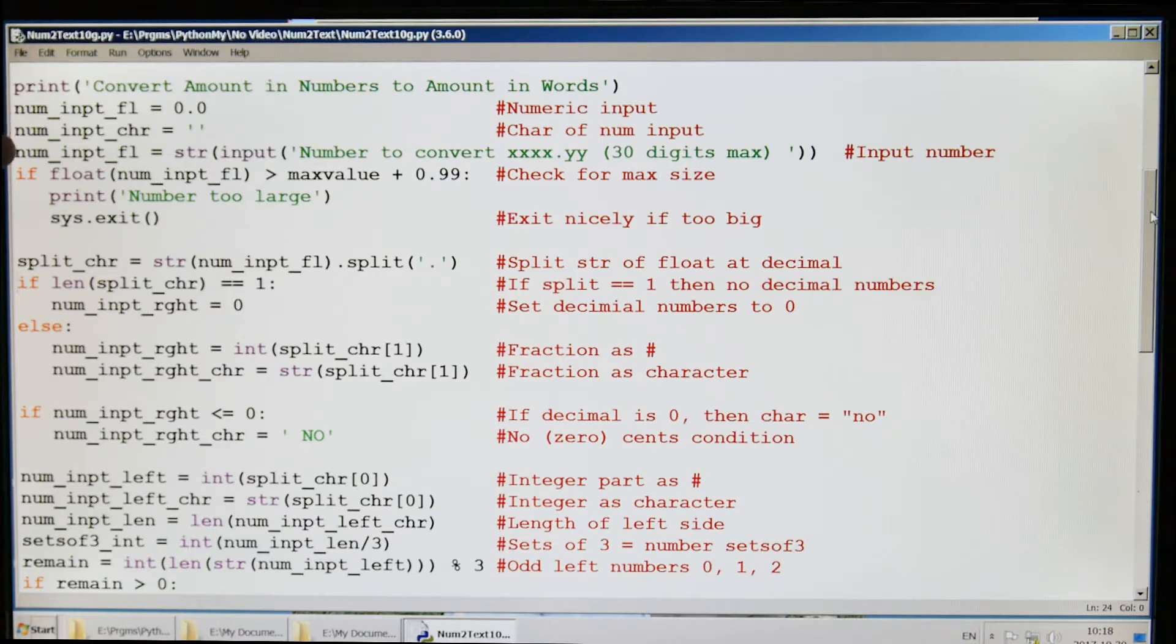We're going to take the numeric input, take the character value of the numeric input, and check to see if the number is too big because the program has a limit of something like several quintillion. If it's too big we're going to jump out of the loop. We're going to split the string into different pieces so that we can examine each of the numbers individually.